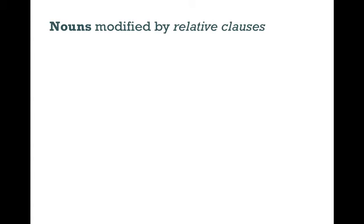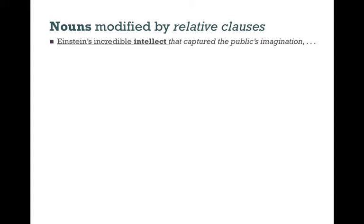You'll remember from the first paragraph this phrase: Einstein's incredible intellect that captured the public's imagination. We have the word intellect — that's the noun. The whole noun phrase is Einstein's incredible intellect. Incredible is an adjective that modifies the noun intellect. Einstein's is a possessive noun that modifies incredible intellect. Intellect is our core noun. Notice that in English there are many ways to modify the noun. We can have adjectives and possessives, which come before the noun, but relative clauses must come after the noun.